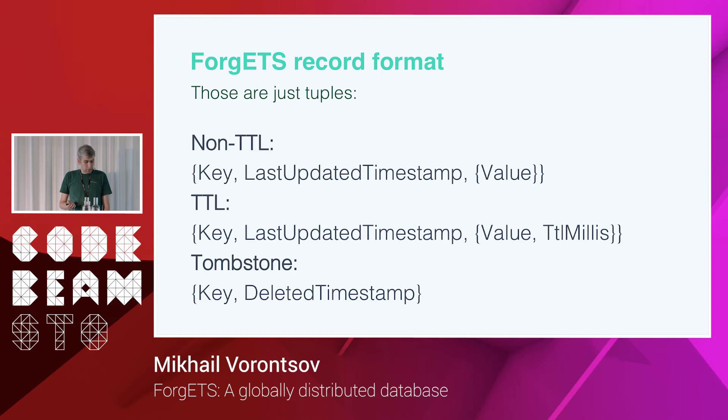The Vargets record format is simple tuples: key, last-updated timestamp, and value. There is also an optional TTL. For tombstones, we don't store a value.